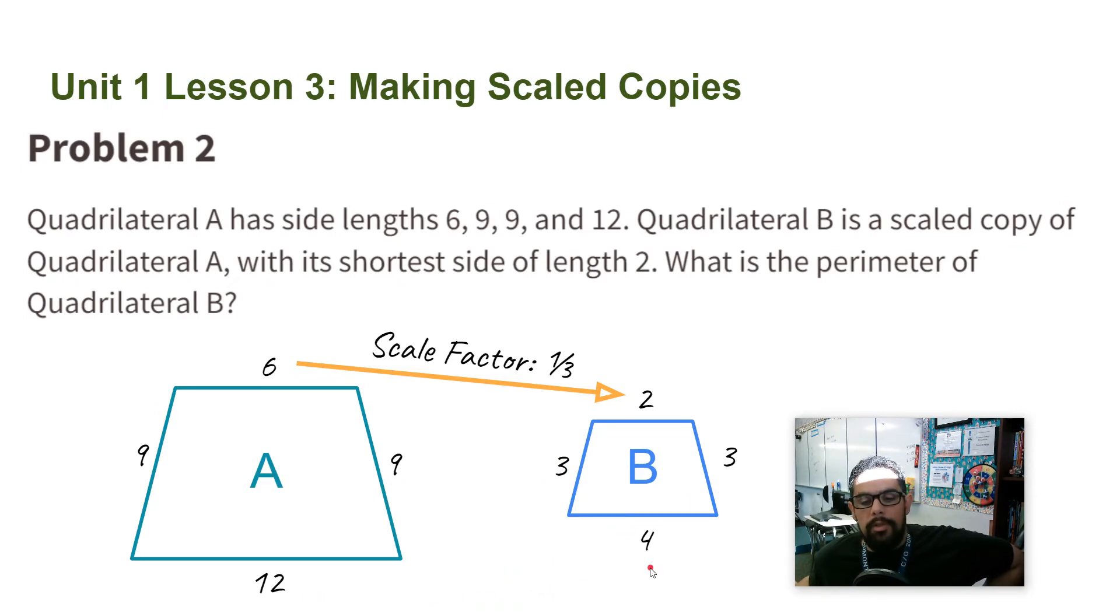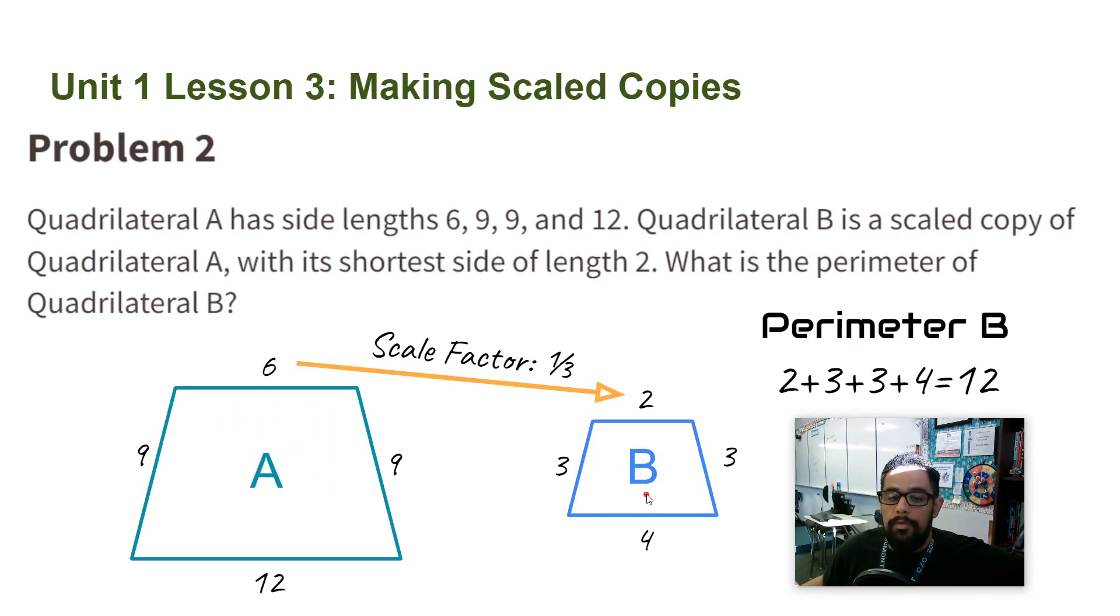Now I know all the sides of this quadrilateral, so I just need to find the perimeter. I'm going to add up all the sides. 2 plus 3 plus 3 plus 4, which adds up to 12. So that's the perimeter of quadrilateral B. Thank you, ladies and gentlemen.